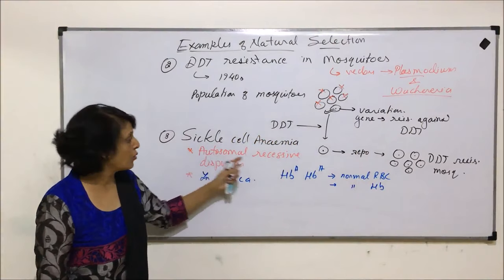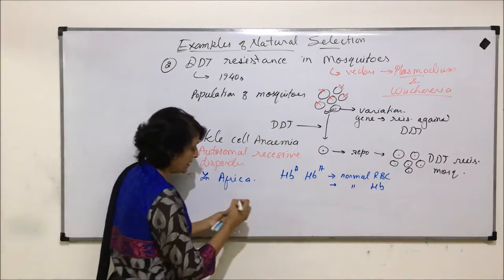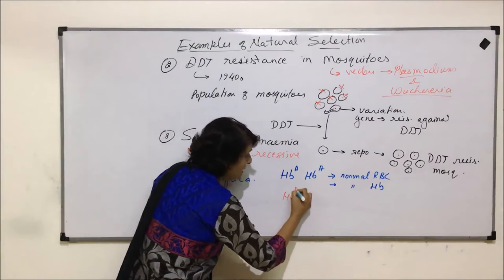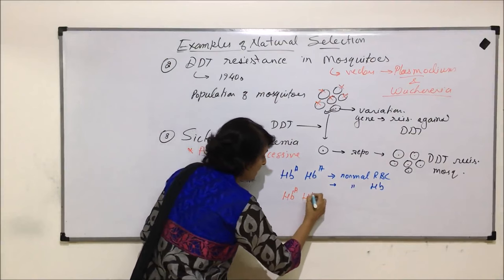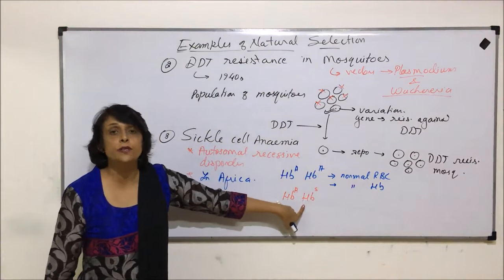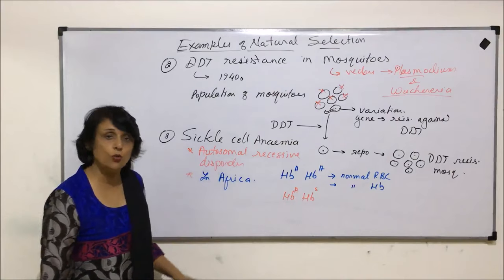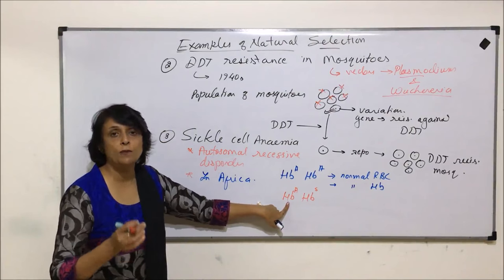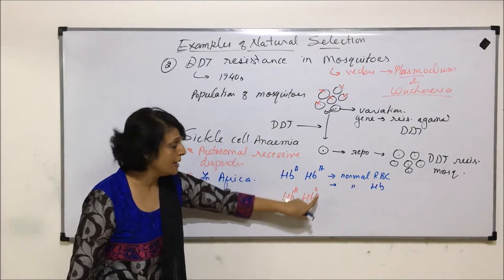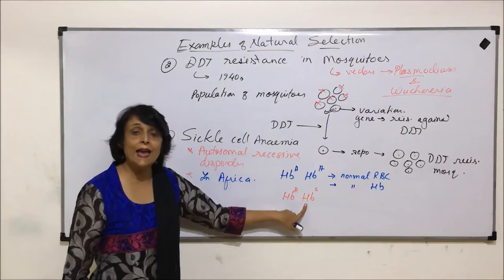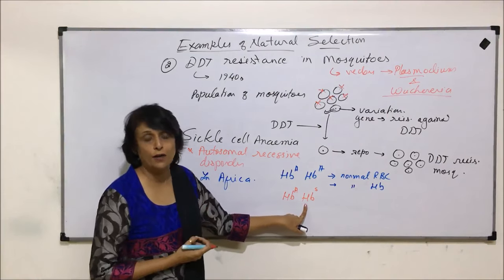As we said, this is a disorder which is recessive. The second situation which arises is one allele is normal and the other allele becomes sickle cell - that means the other allele is the mutant gene. In this situation, one allele is responsible for production of normal RBC and normal hemoglobin, but the other allele produces sickle cell RBC and hemoglobin is also faulty.